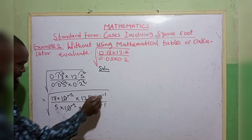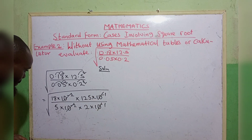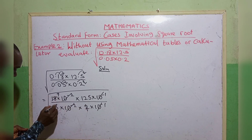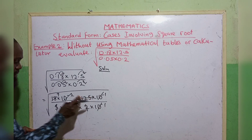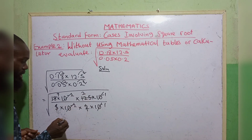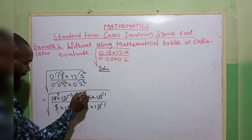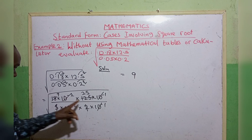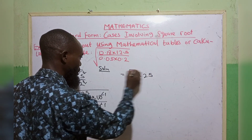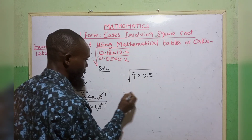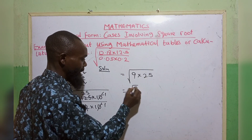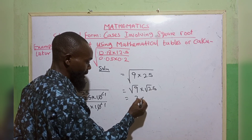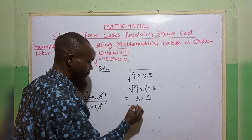Simplifying the numerical parts: 18 divided by 5 gives 2 remainder, and working through the division, 5 into 12 gives 2 and 5 into 25 gives 5. This simplifies the expression to the square root of 9 multiplied by 25. So we have square root of 9 times square root of 25, which is 3 times 5, giving us 15.